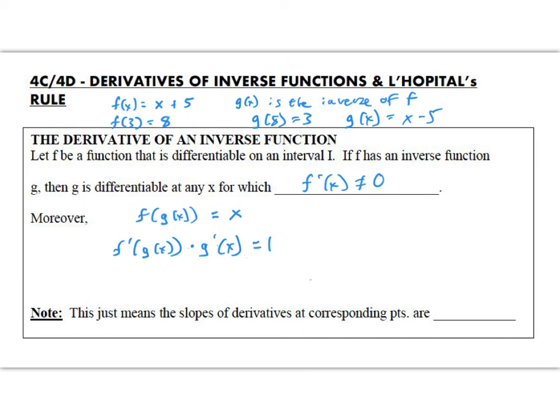On the right side, I end up with 1. The thing I'm interested in is the derivative of my inverse function. What I need to do is divide by this, and I'm going to end up with g prime of x being 1 over f prime of g of x. That means that the slopes of derivatives at corresponding points are simply reciprocals of each other.